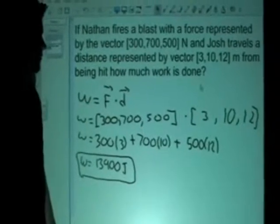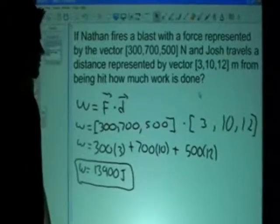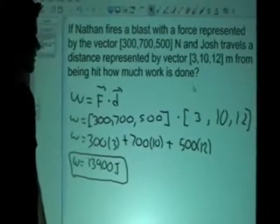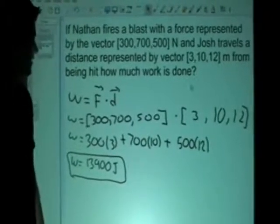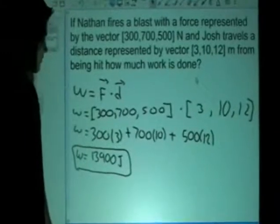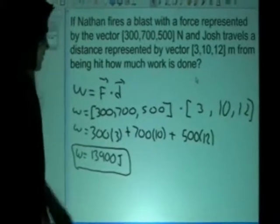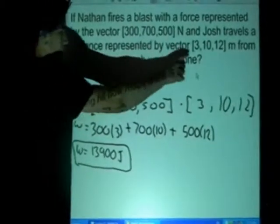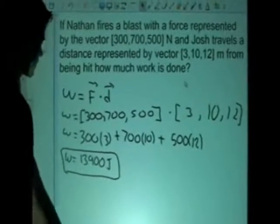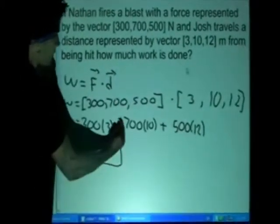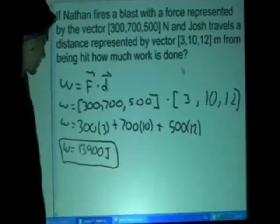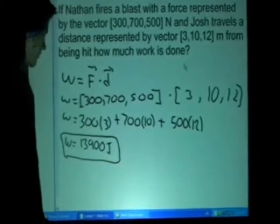If Nathan fires a blast with a force represented by the vector 300, 700, 500 newtons, and Josh travels a distance represented by the vector 3, 10, 12 meters from being hit, how much work is done? Work is represented by the formula force dot product of displacement. Therefore, you insert the force value and displacement value into the equation and multiply out using the dot product. So 300 multiplied by 3 plus 700 multiplied by 10 plus 500 multiplied by 12, which is represented here. Therefore, the work done on Josh is 13,900 joules.